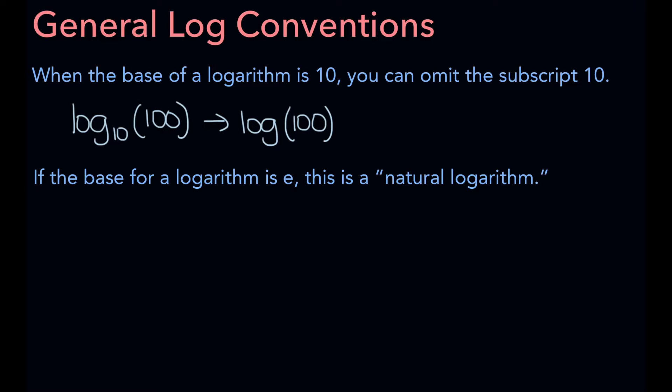The second convention is if the base for a logarithm is the irrational number e, this is a natural logarithm. If you don't know what e is yet, don't worry about this part. But if you do, and you had the log base e of x, this can be written as ln of x, where ln stands for the natural logarithm and represents a logarithm with a base e.